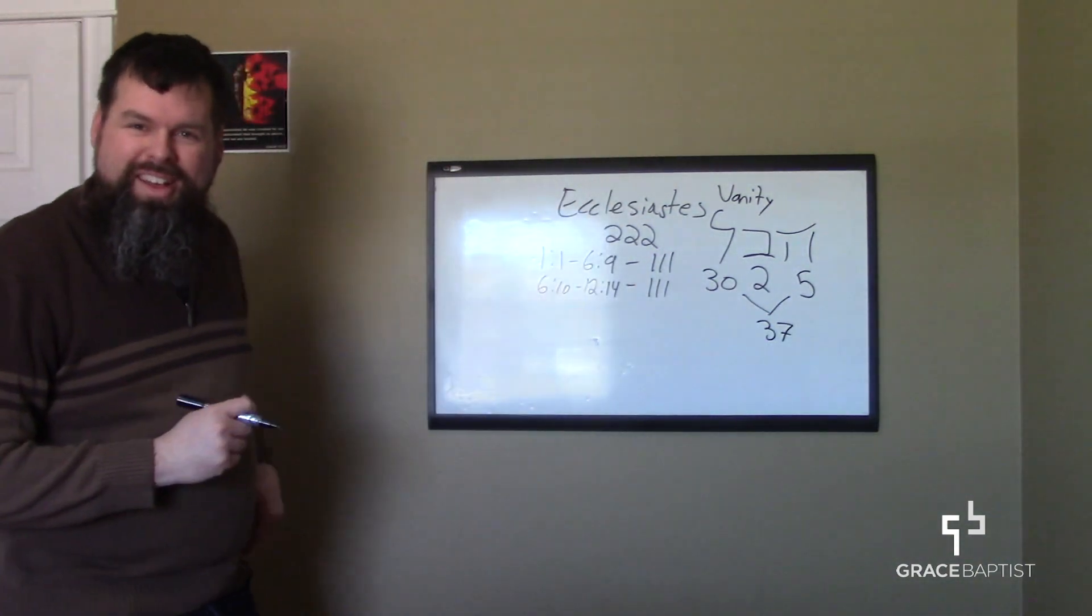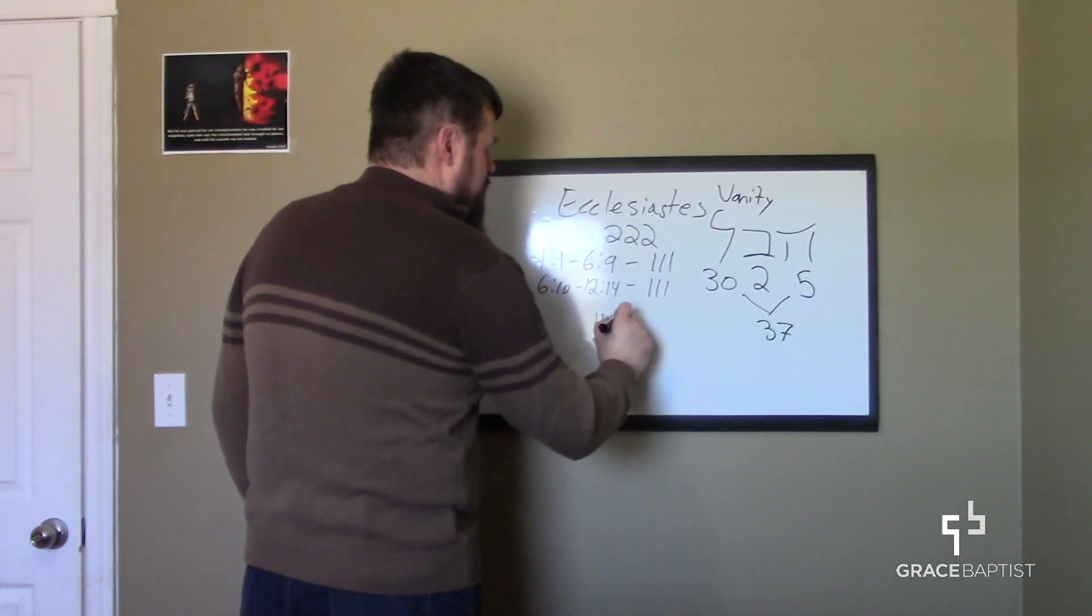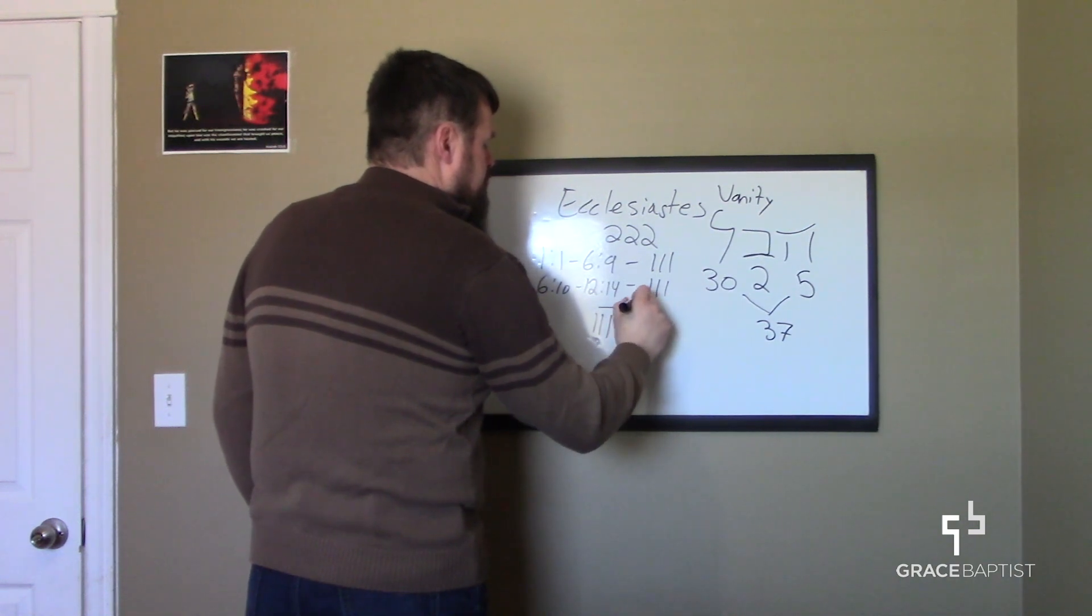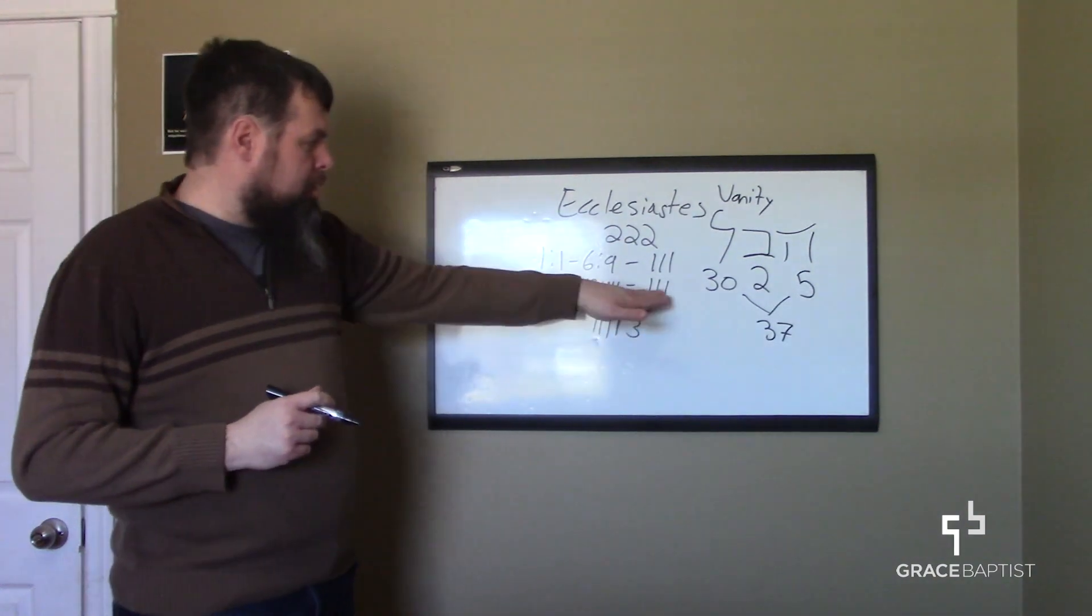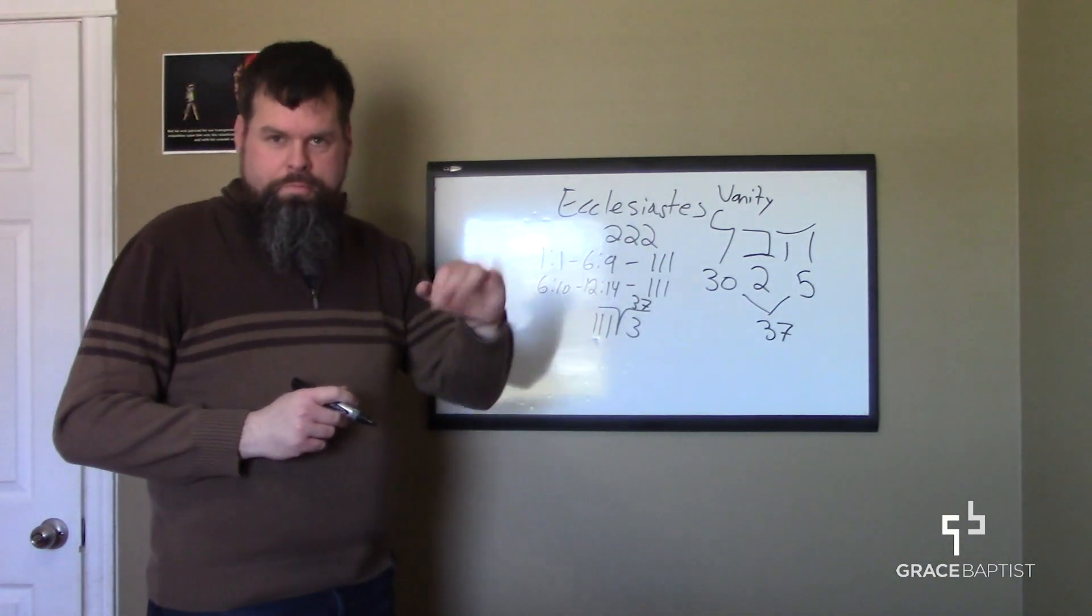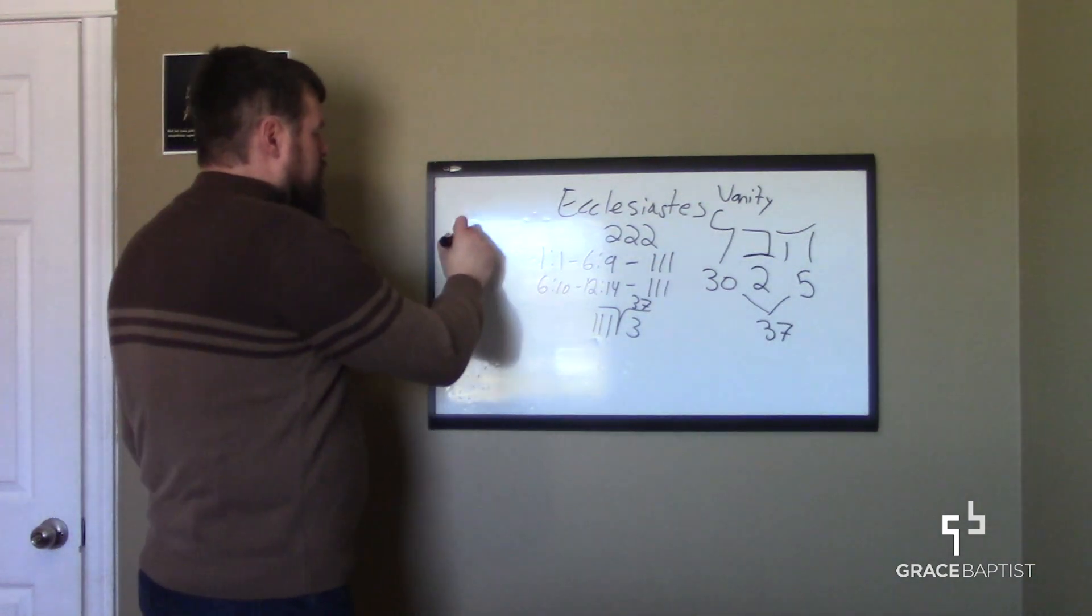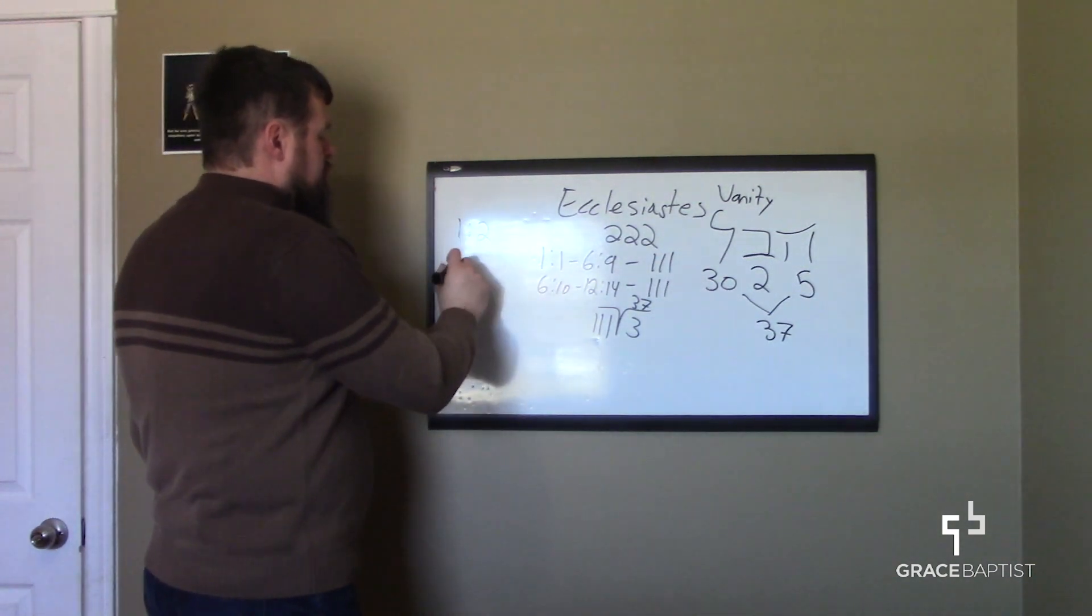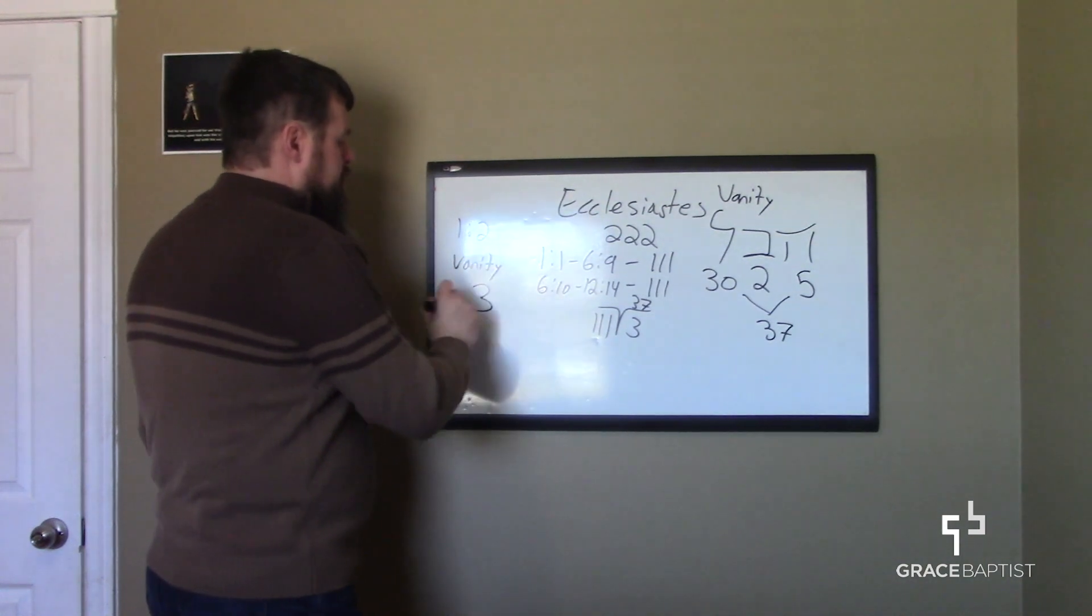Now here's where it gets really cool. 111 divided by 3 is 37. So 37 goes into 111 three times. Again, what's really cool then is in Ecclesiastes 1 verse 2, the word for vanity is used three times.